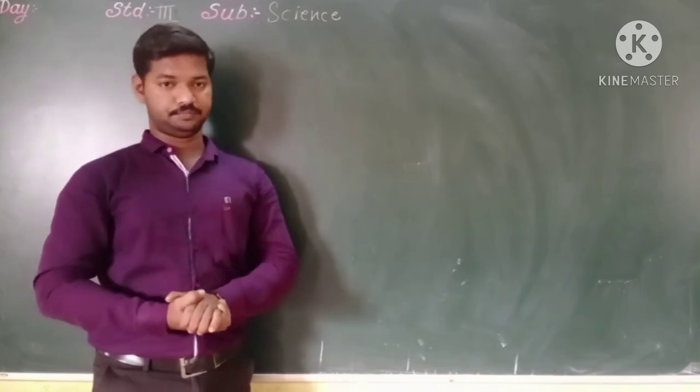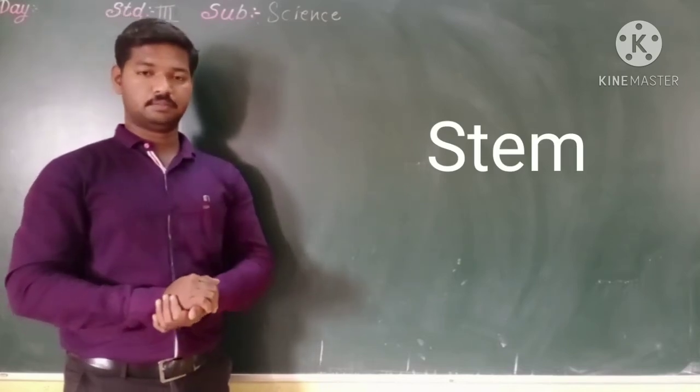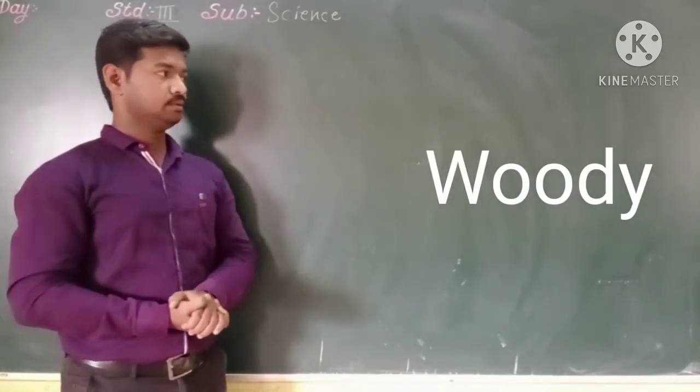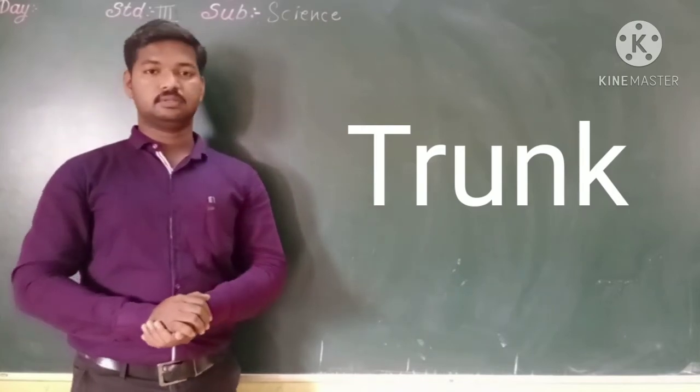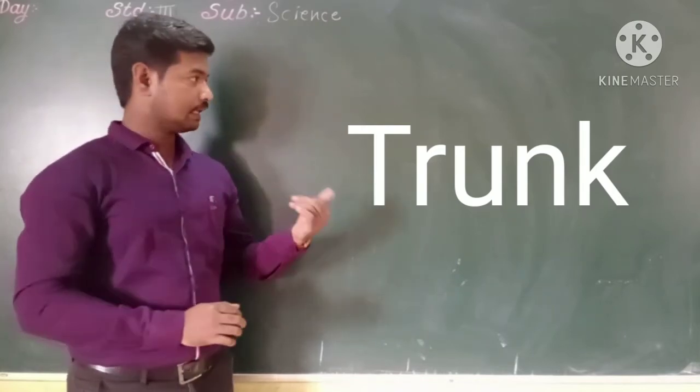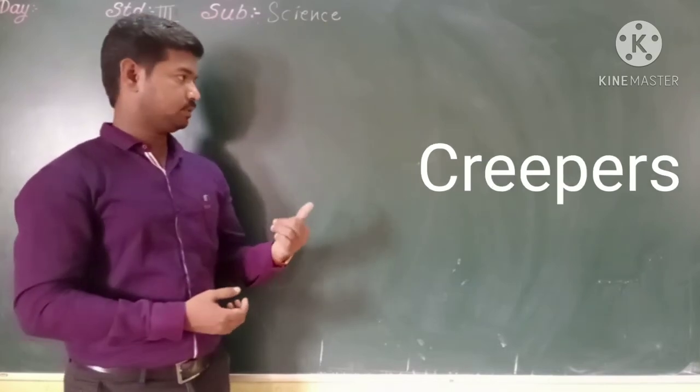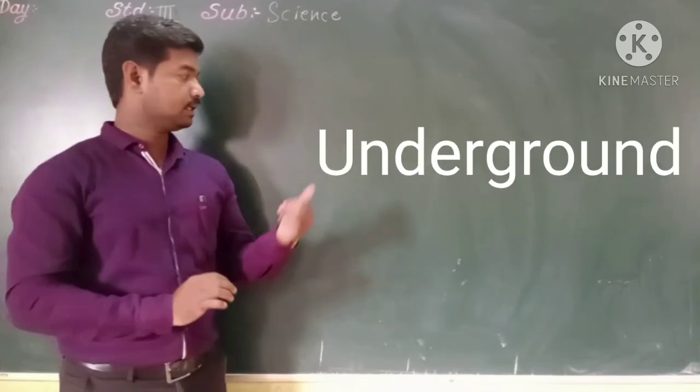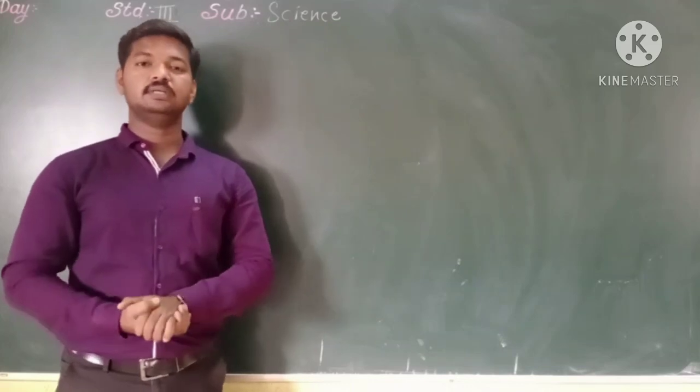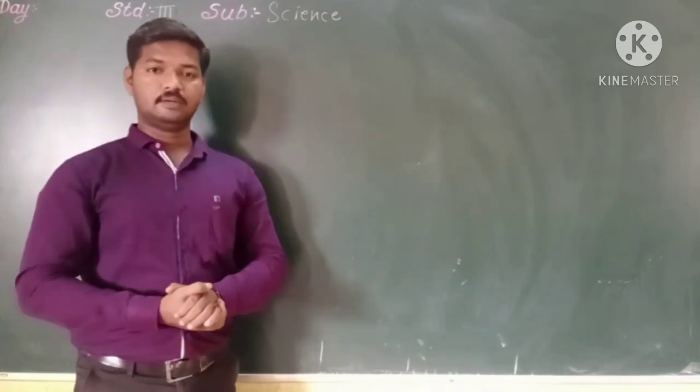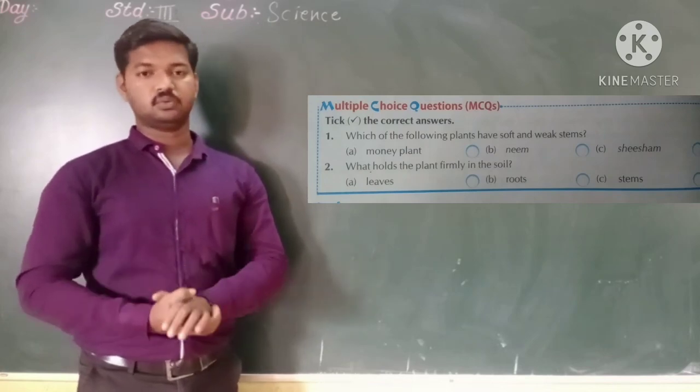So now I will give you words that you want to copy. Number one, stem. Number two, woody. Number three, trunk. Number four, climbers. Number five, creepers. Number six, underground. Okay? So these are all words we have to write. Now see on page number 38, multiple choice questions are given there. Let you do so. Okay?